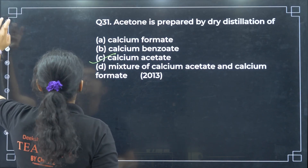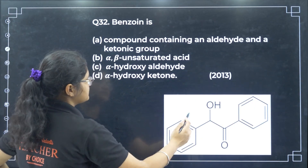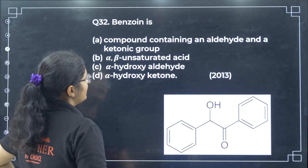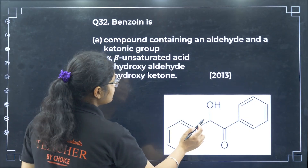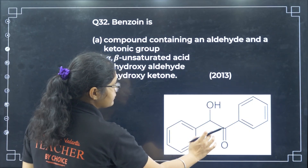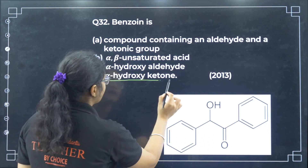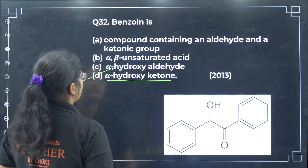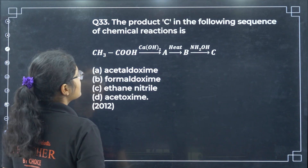Benzoin: looking at the structure of benzoin, it contains a ketone group and also a hydroxyl group on the adjacent carbon. So benzoin is an alpha hydroxy ketone — option D.